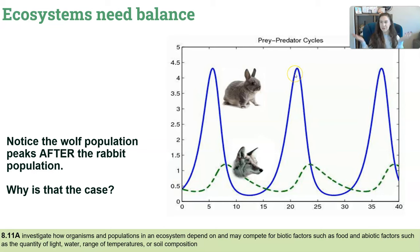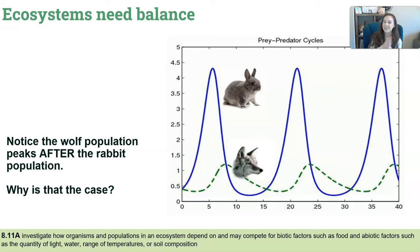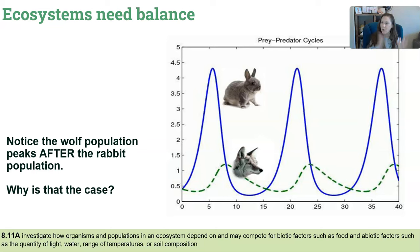After the rabbits increase again, the wolves make their way back in. This is the ebb and flow we talked about at the beginning — it's going to rise and it's going to fall. One thing happens and that causes the other to follow.